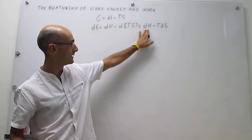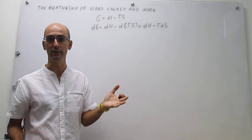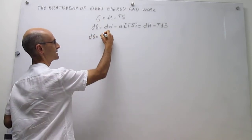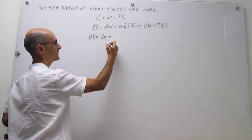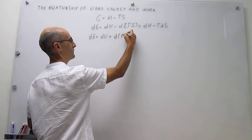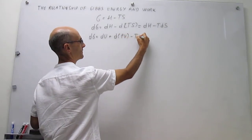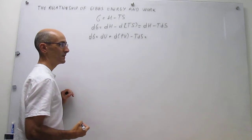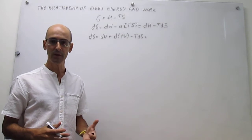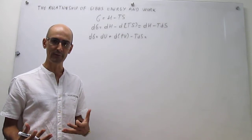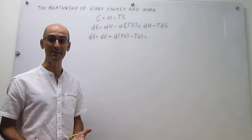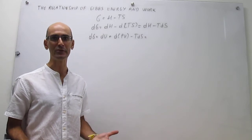The next thing we can do is plug in the definition of enthalpy, which we learned when dealing with the first law. The definition of enthalpy is the sum of the internal energy plus the product of pressure and volume — so dU + P·dV — minus T·dS. Here we can take a second assumption: that we are working at constant pressure. So far we have two assumptions: constant temperature and constant pressure, which are conditions we normally work under.